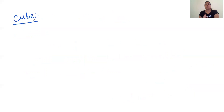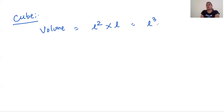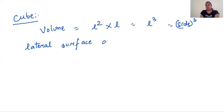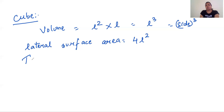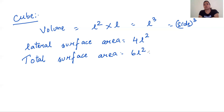Now let's move to the cube. For a cube, the base shape is a square, and all sides are equal, so height is also L. Volume = area of square × L = L² × L = L³, or side cubed. Lateral surface area is the area of the four walls; since each face has area L², the lateral surface area = 4L². Total surface area is the area of all six walls = 6L².